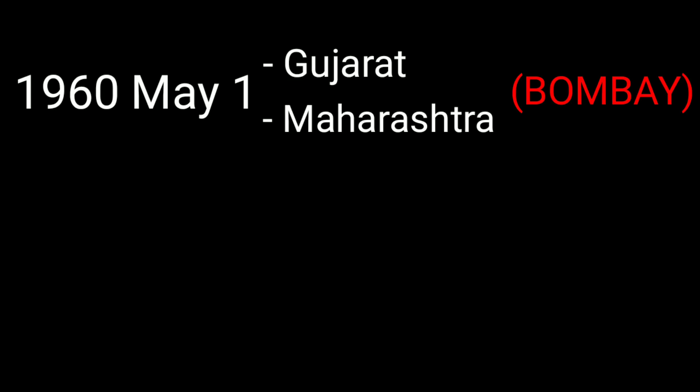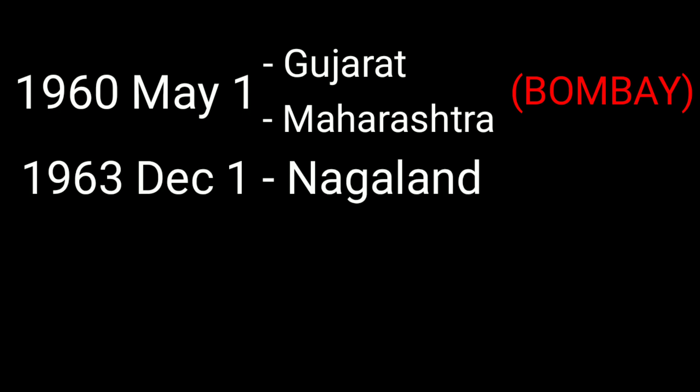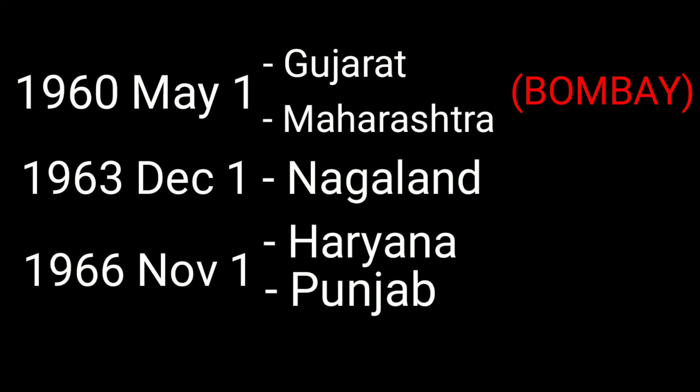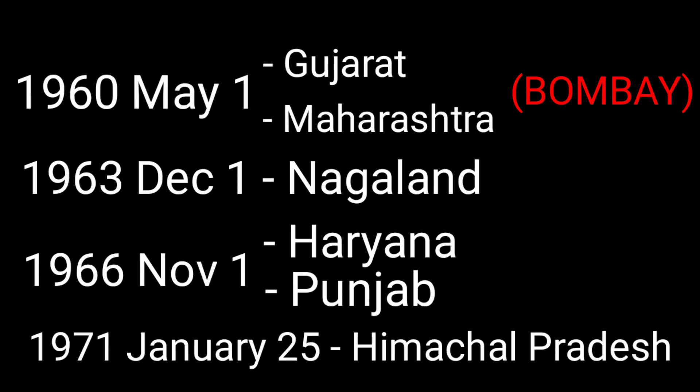On May 1, 1960, Gujarat and Maharashtra were formed from Bombay. On December 1, 1963, Nagaland was formed from Assam. On November 1, 1966, Haryana and Punjab were formed. On January 25, 1971, Himachal Pradesh was formed.